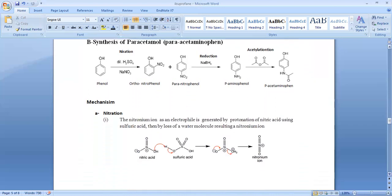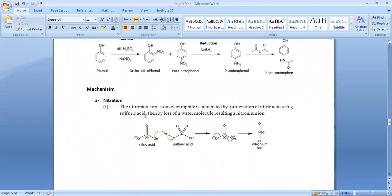This is called acetamol or citamol. What is the mechanism of nitration? First of all, we will talk about nitration. How do we generate nitronium ion? Nitronium ion as an electrophile is generated by protonation of nitric acid using sulfuric acid, then by loss of water molecules resulting in nitronium ion.